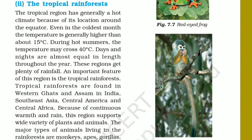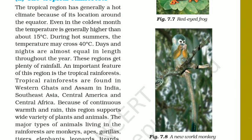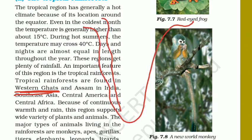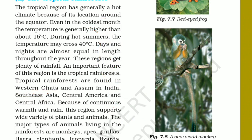The tropical rainforest in India can be found in the Western Ghats, situated at the western part of the country — like the Mumbai, Maharashtra, and Kerala region. In the eastern part, we can find tropical rainforest in Assam as well as in South Asia. Central America and Central Africa are also places where we can find tropical rainforests, as you have already heard about Nigeria and other countries.